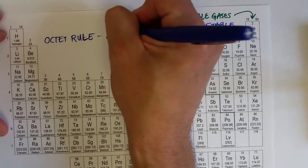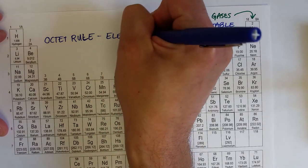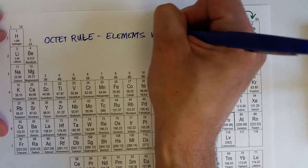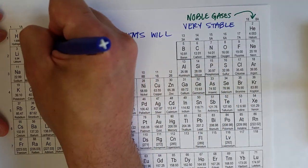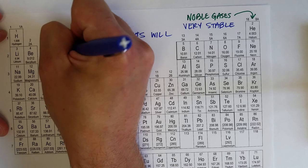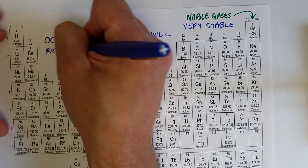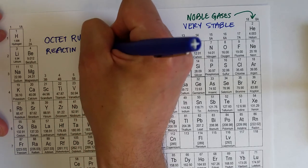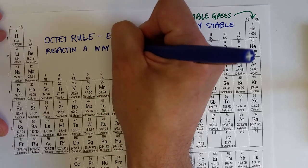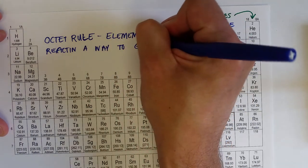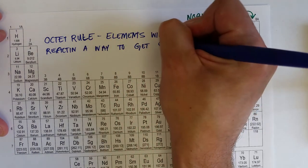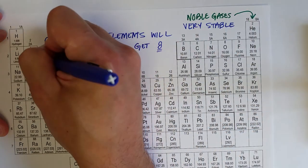Elements will react in a way to get, or achieve, eight valence electrons.